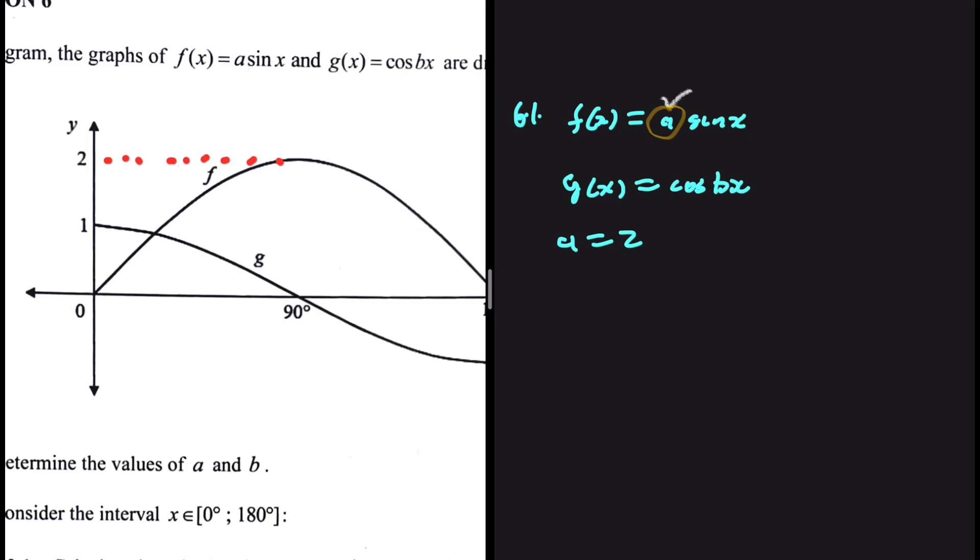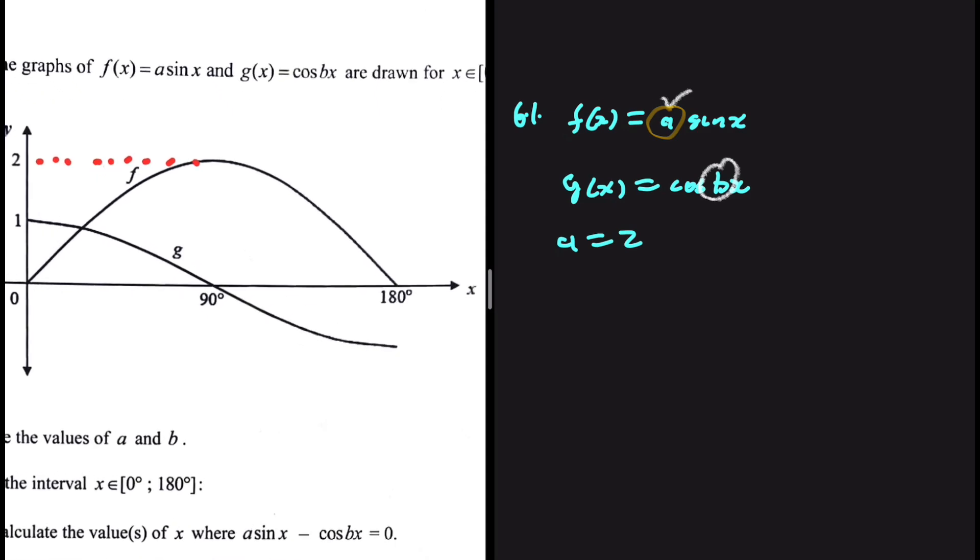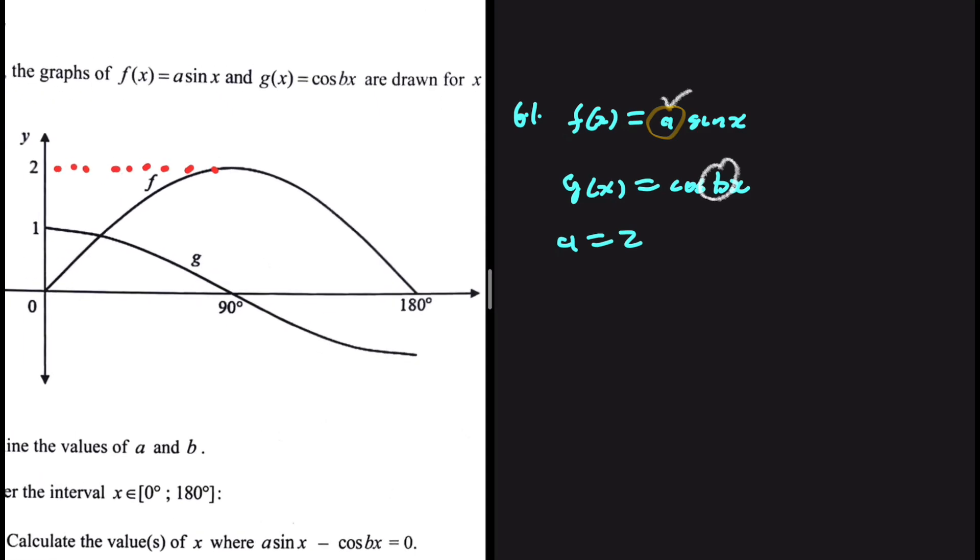Now let's look at g of x. We're interested in the value of b. If you look at the graph, if you look at the sketch, the diagram we have, you're going to realize that we have an original cosine graph. This graph g of x is just equals to cos x. There's no alterations whatsoever.